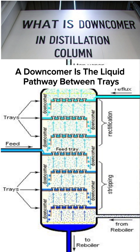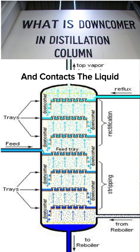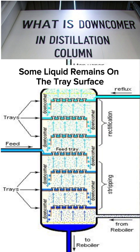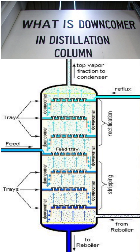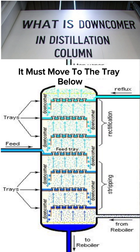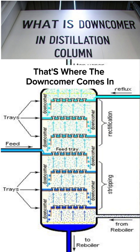A downcomer is the liquid pathway between trays. When vapor rises through the tray openings and contacts the liquid, some liquid remains on the tray surface. But that liquid cannot stay there forever — it must move to the tray below without disturbing the rising vapor. That's where the downcomer comes in.